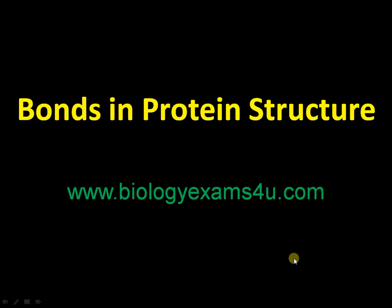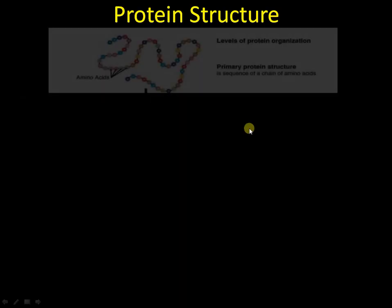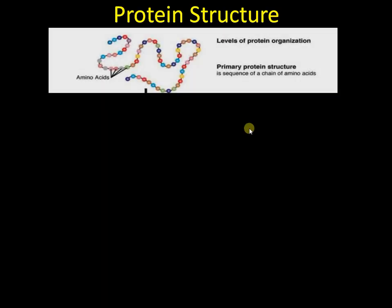Welcome to biologyexamsforall.com. In this tutorial we are going to discuss the bonds involved in protein structure. First of all, let us start with an introduction about protein structure. Proteins consist of amino acids that are joined by peptide bonds, and that forms the linear chains of amino acids.